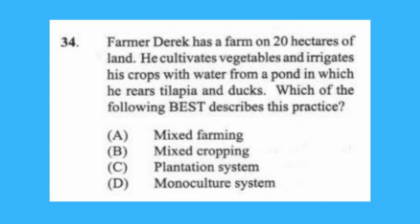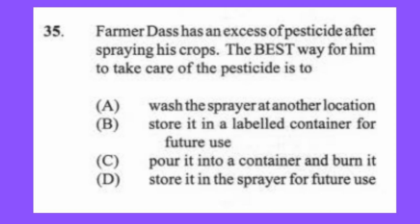Question 34: Farmer Derek has a farm of 28 tiers of land. He cultivates vegetables and irrigates his crop with water from a pan in which he rears tilapia and ducks. Which of the following best describes this practice? (a) mixed farming, (b) mixed cropping, (c) plantation system, (d) monoculture system. The answer is A, mixed farming.